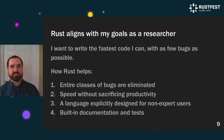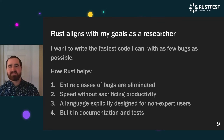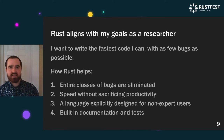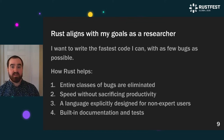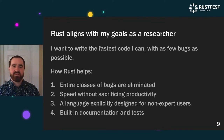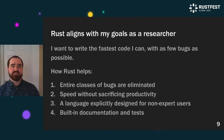For me, Rust is exciting because it really aligns with my goals as a researcher. I want to write the fastest code I can with as few bugs as possible — I sort of want both things at once. Rust really helps me here because entire classes of bugs are eliminated compared to other unsafe systems programming languages. This means I can actually focus my time on developing a better algorithm or doing other work, and not having to worry about bugs as much as I would in another language. It's also a productive, modern programming language with competitive performance to C and C++.